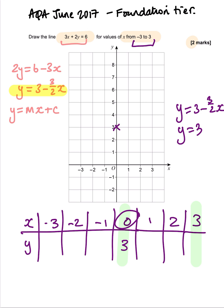When x equals 3, y equals 3 minus 3 over 2 times 3. Now you can pop that into your calculator on a calculator paper. So 3 minus 3 over 2 multiplied by 3 gives me minus 1.5. So that's minus 1.5. So I'm going to go along to 3 and down to 1.5.